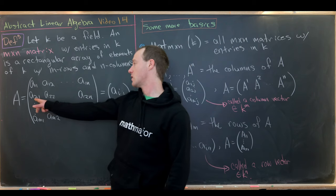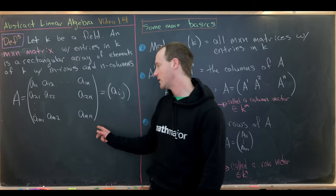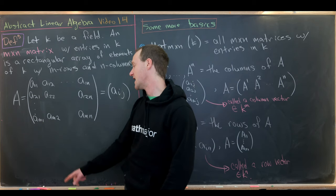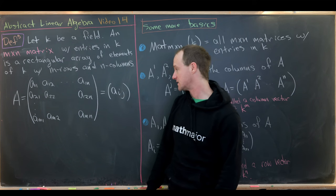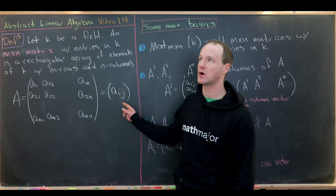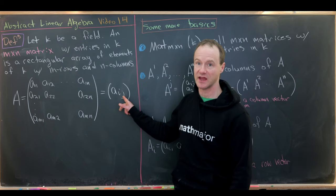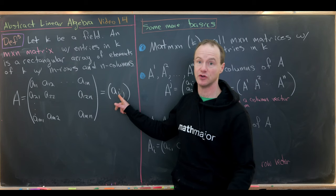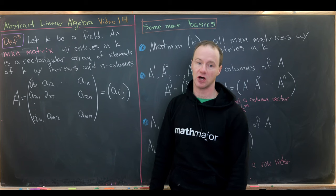The second row contains A21, A22, up to A2N, all the way down to the Mth row, which is AM1, AM2, and AMN at the very end. Sometimes you write this just in terms of an arbitrary entry, which would be AIJ. The I component tells you which row you're in and the J component tells you which column you're in.